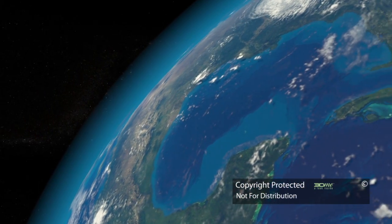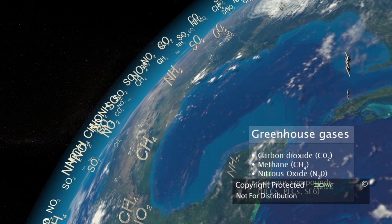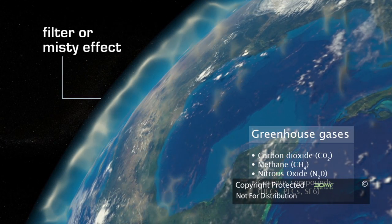These gases and air pollutants form a high-level cloud cover that sits above the weather clouds and spreads all around the earth like a filter or misty effect.